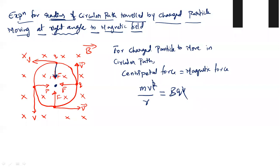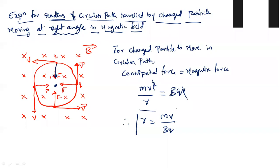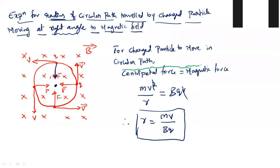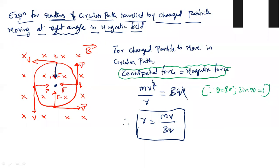R is equal to MV divided by BQ. This is the expression for radius of the circular path traveled by the charged particle when it enters the magnetic field at right angles. The necessary centripetal force is provided by the magnetic force. Since theta equals 90°, sin 90° equals 1, and after canceling one velocity term, R equals MV divided by BQ.